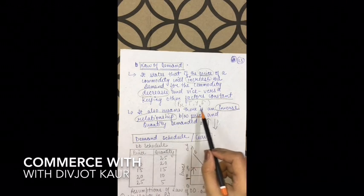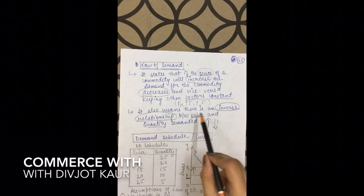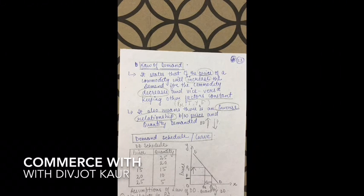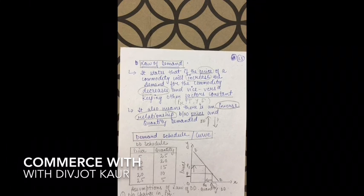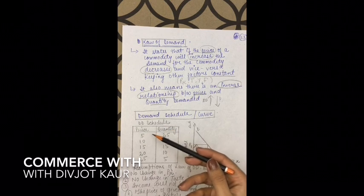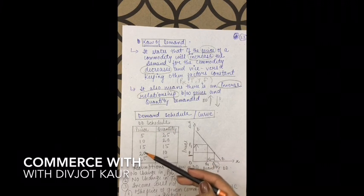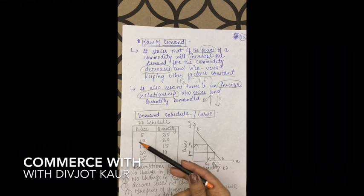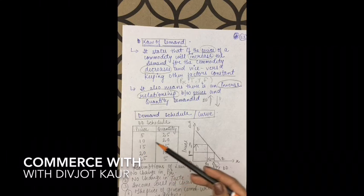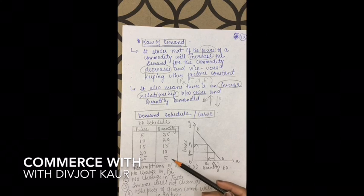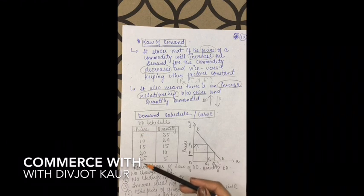There is an inverse relationship between price and quantity demanded: if one increases, the other decreases. You can prove the law of demand through demand schedule — as price increases from 5 to 10 to 15 to 20, quantity keeps decreasing. You can take any figures but keep the relationship correct: if price is going up, quantity must go down. Use small simple figures like 5, 10, 15 — not 5,000 or 500.